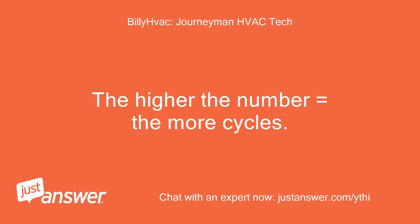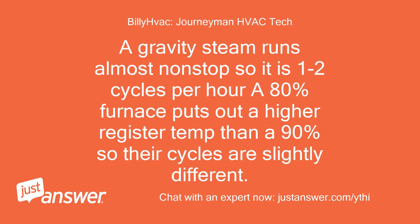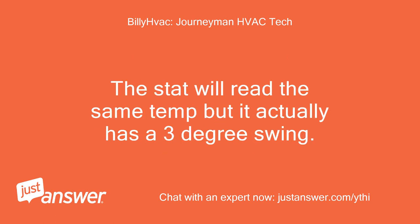The higher the number equals more cycles. A boiler, for example, heats slower, thus it would run 3 long cycles. A gravity steam runs almost non-stop so it is 1 to 2 cycles per hour. An 80% furnace puts out a higher register temp than a 90%, so their cycles are slightly different. Your Robert Shaw is faking the temp by overshooting what you actually want, thus it stays off longer. The stat will read the same temp but it actually has a 3 degree swing.